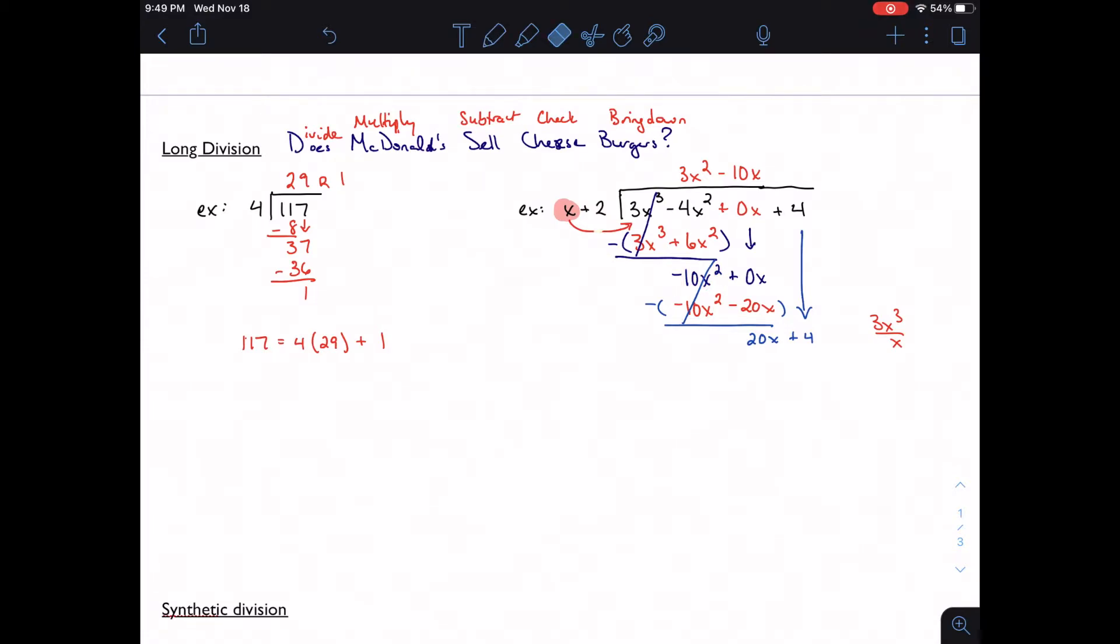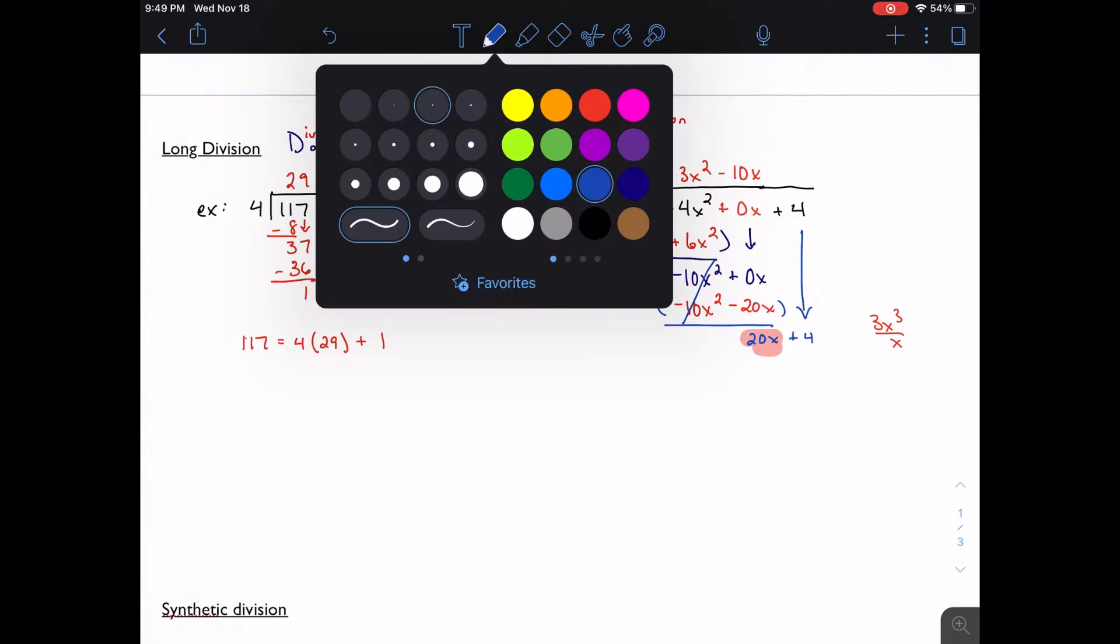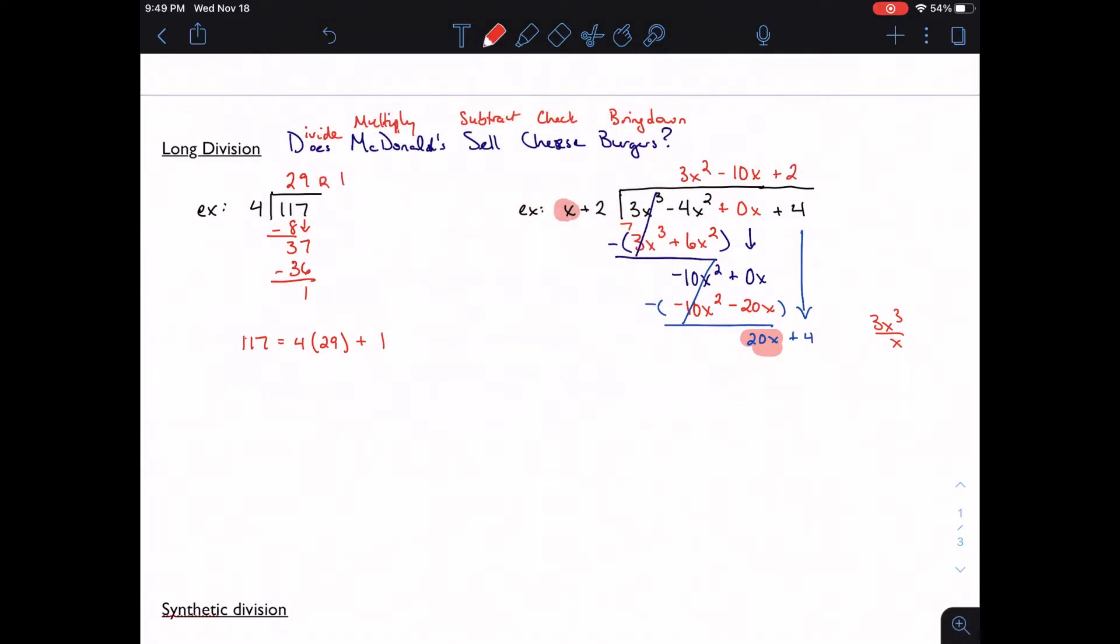And again, I'm going to ask myself the same question. Does x go into 20x? Yes, it does. How many times? 20 times. Plus 20. I'm going to multiply 20x plus 40. I'm going to subtract, and I get negative 36. So I have a remainder of 36.